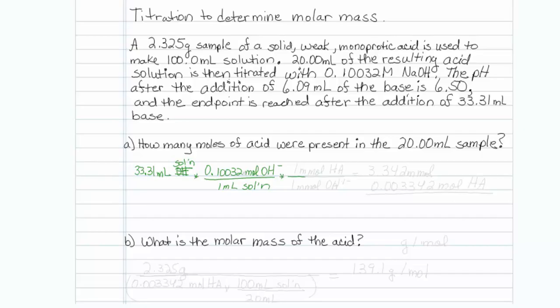Since we are told that it is a monoprotic acid, for every 1 millimole of hydroxide, there is 1 millimole of whatever my weak acid is. And I should make that millimoles as well. Now all our units work out. So I just have to take 33.31 times 0.10032, and I will get 3.342 millimoles or 0.003342 moles of acid in that 20 mil sample.